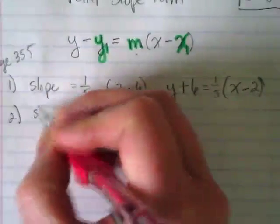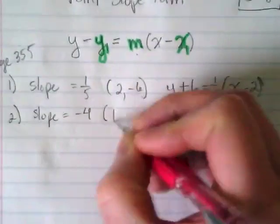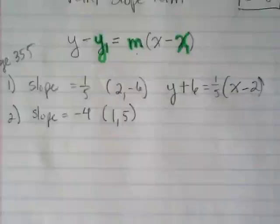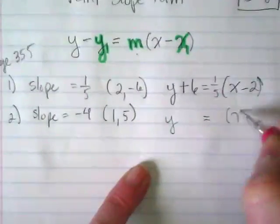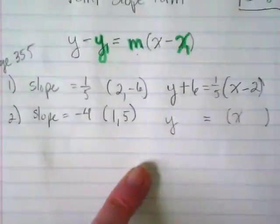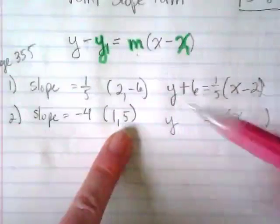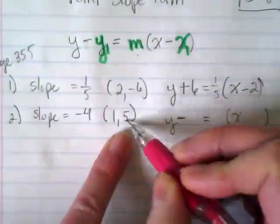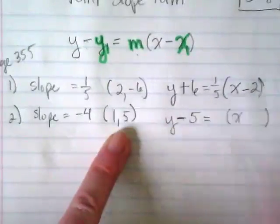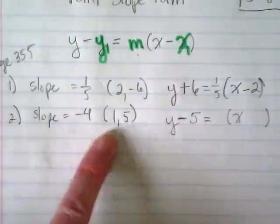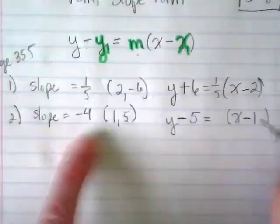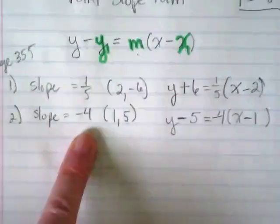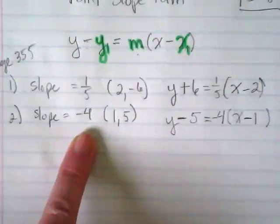Number two: slope equals negative four, and the ordered pair is one comma five. We know the Y is going to be here, equals sign, X, and we want to plug in everything else. We start with our ordered pair. This is a minus in the equation; we have a five, so this stays a minus. The X also — we keep the minus from the equation and we put in the one. And what's our slope? Negative four. That's it.